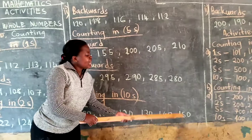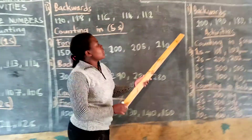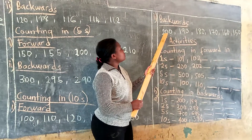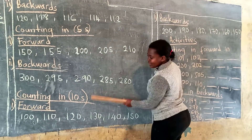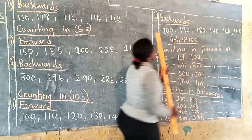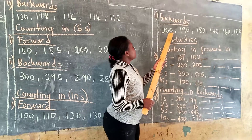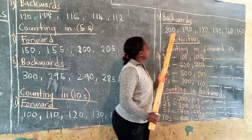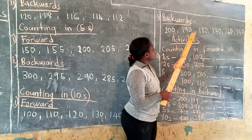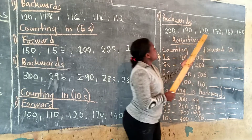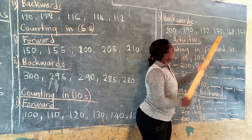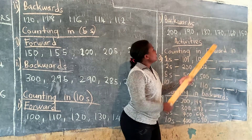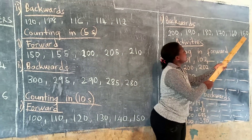Now backwards, you subtract 10, you are still counting in tens. Backwards: 200 minus 10, you get 190. 190 minus 10, you get 180. 180 minus 10, you get 170. 170 minus 10, you get 160. 160 minus 10, you get 150.